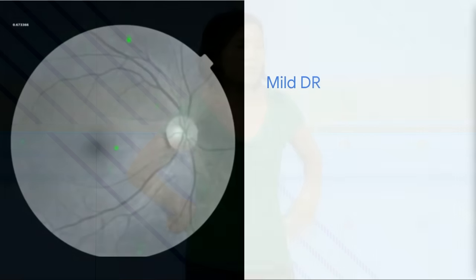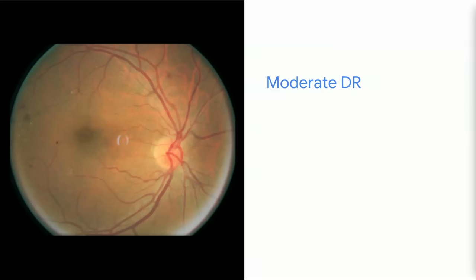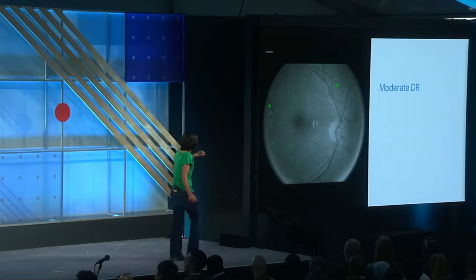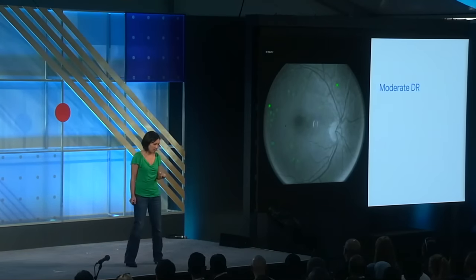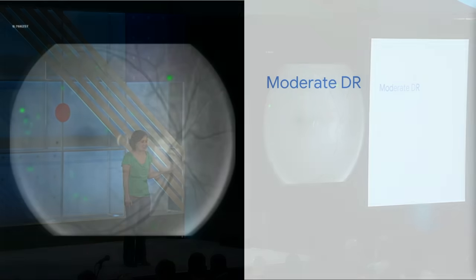Using this technique, we applied it to the fundus images and said 'show me where.' This is a case of mild disease — it looks completely normal to me, but a highly trained doctor would be able to pick out little things called microaneurysms where the green spots are. Here's a picture of moderate disease — a little worse because you can see some bleeding at the edges. Here's the heat map — you can see that it picks up the bleeding. There are also two artifacts in this image: a dust spot and a little reflection in the middle of the image, and you can tell the model essentially ignores them.